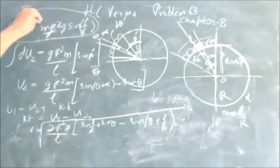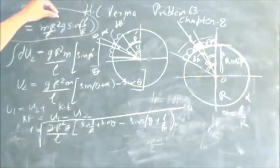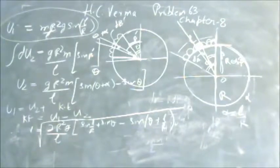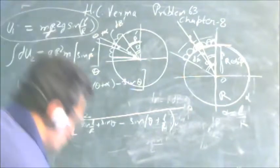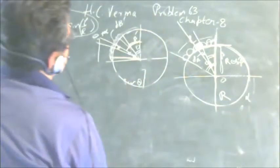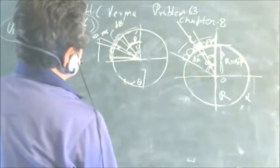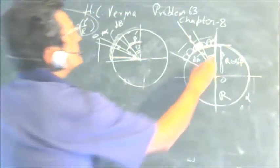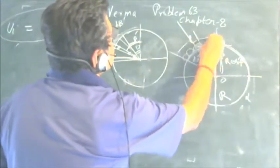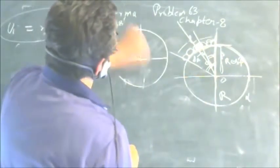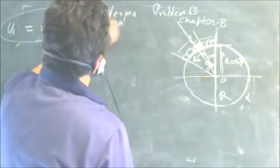Answer number 1 was that U1 = MR²G/L · sin(L/R) is the gravitational potential energy. Now we have to find the tangential acceleration — it may appear slightly confusing, so let me clarify how to approach the third part of the question: the tangential acceleration when the chain just starts falling down.